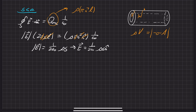Now we can start plotting. With |E| on the vertical axis and r on the horizontal axis, in the range from 0 to a the electric field is linear in s — just a global constant times s — so it's a straight line going up with slope equal to ρ/(2ε₀).